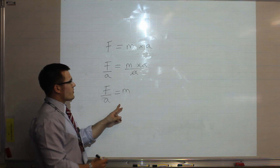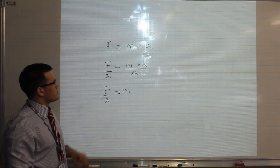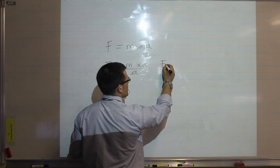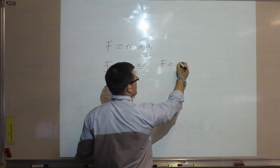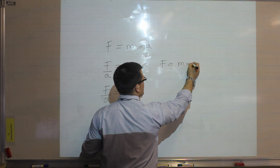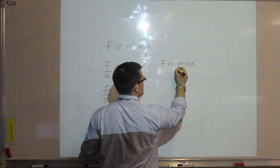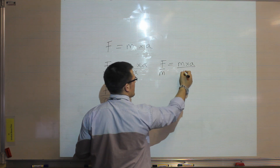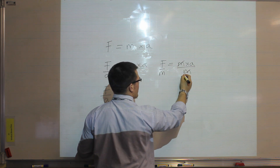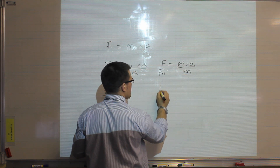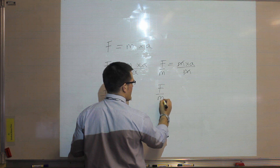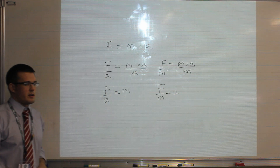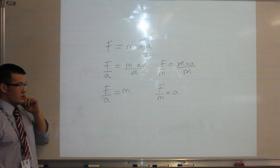So now mass is the subject of the equation. We could do the same thing for acceleration — in that case we would take the force and divide both sides by the mass, so that mass cancels out on this side and we are left with acceleration as the subject.